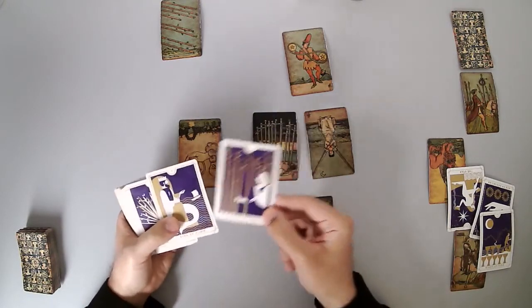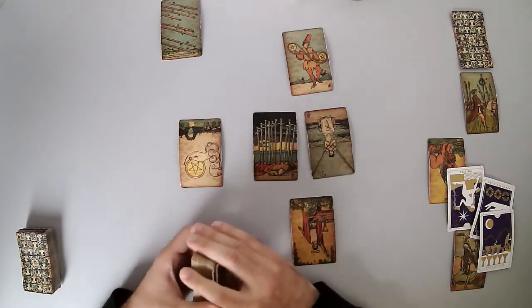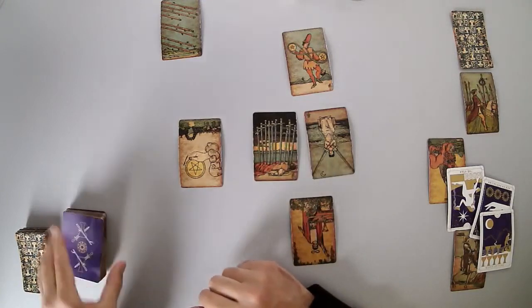Nine of wands and king of cups. This person loves you, but is being very guarded, is not trusting the connection as much as before.